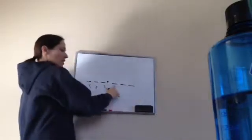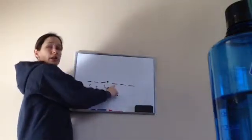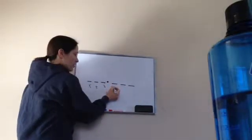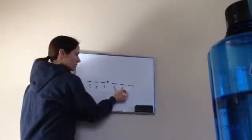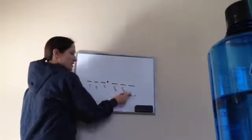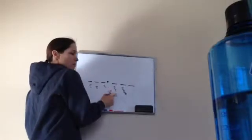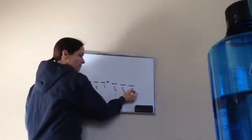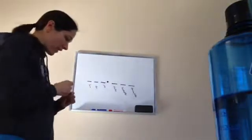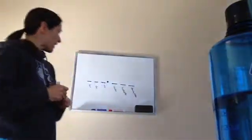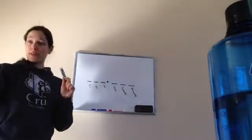Now let's go to the right of the decimal and do three places. What's this first place called? Tenths — very good. Hundredths — very good, making sure you add your '-ths.' And thousandths — very good, thousands with the '-ths.' Excellent.